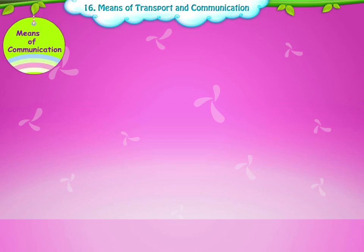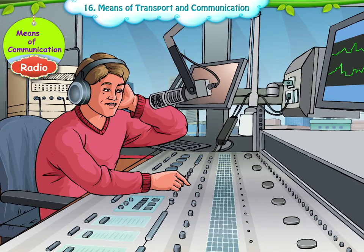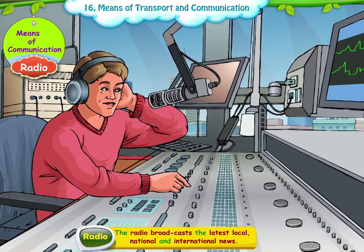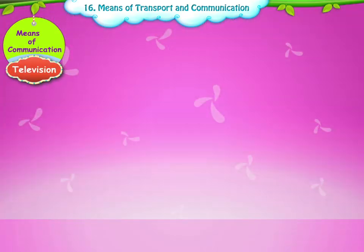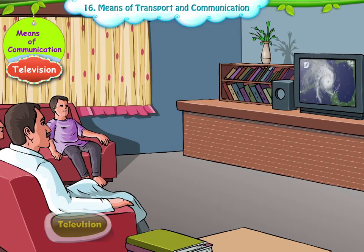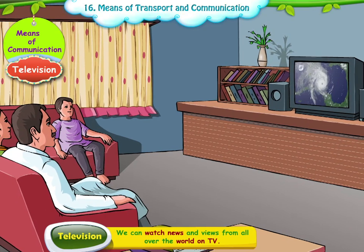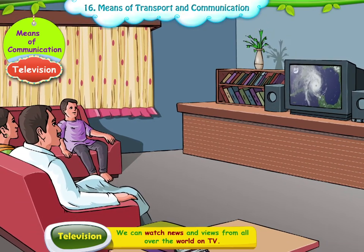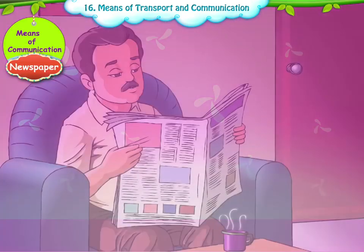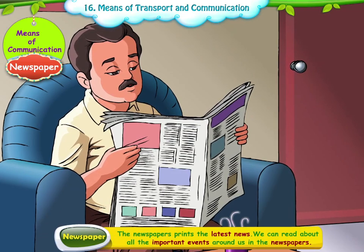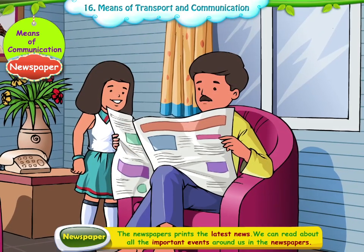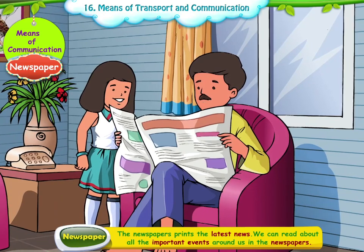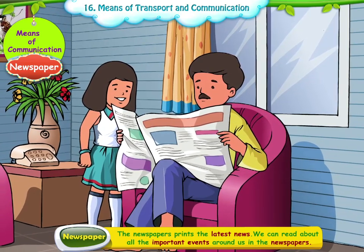Now let us learn about the different means of communication. The radio broadcasts the latest local, national, and international news. Second, the television. We can watch news and views from all over the world on TV. Third, the newspaper. Newspapers print the latest news, and we can read about all the important events around us in the newspapers. They also carry advertisements.